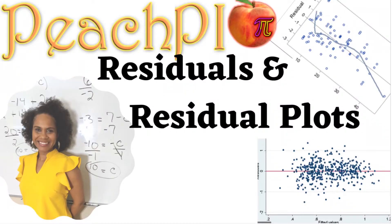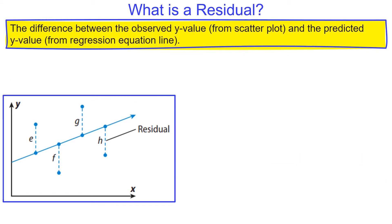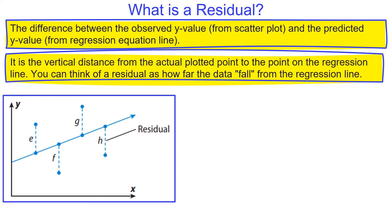In this lesson we're looking at residuals and residual plots. A residual is the difference between the observed y value from the scatter plot and the predicted y value from the regression equation line. It is also the vertical distance from the actual plotted point to the point on a regression line.